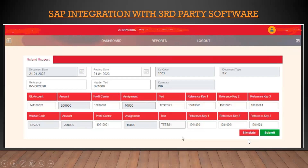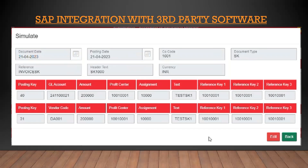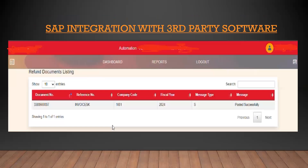There are two options: Simulate and Submit. We have given the Simulate option so the user can review the data before submitting. If there is an issue after simulating, they can click Edit or go back and correct it, then Submit. Once submitted, through the API the data is pushed into SAP and through the BAPI the document gets posted. The user sees a success message with the document number generated in SAP — 3380647 — along with reference number, company code, fiscal year, and message type S meaning successful.